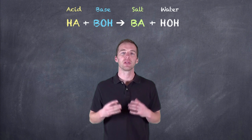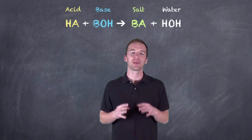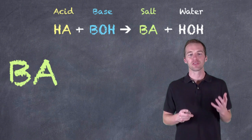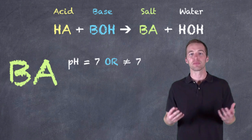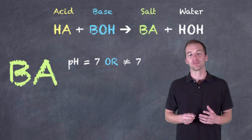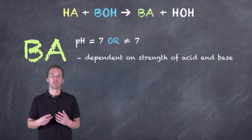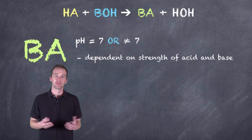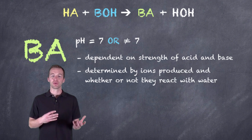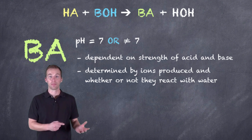Up until this point, we've talked about titrations and neutralization reactions as producing a salt and water, but let's take a closer look at that salt, because the salt itself can have a pH of 7. In certain types of acid-base reactions and titrations it will have a pH of 7, but that's really dependent on the strength of the acid and the base being combined, and which is going to dictate ultimately what the pH is of the solution. The ultimate determining factor is going to be the ions produced by the acid and the base to form the salt, and whether they're going to subsequently react with water and behave as an acid or a base.